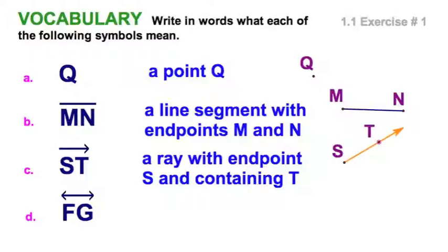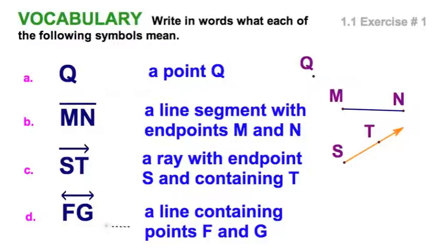And finally, FG is a line. This symbol is a line containing points F and G. We could say it's a pair of opposite rays, but we'll discuss that in a little bit. So FG like this, that is the line FG.